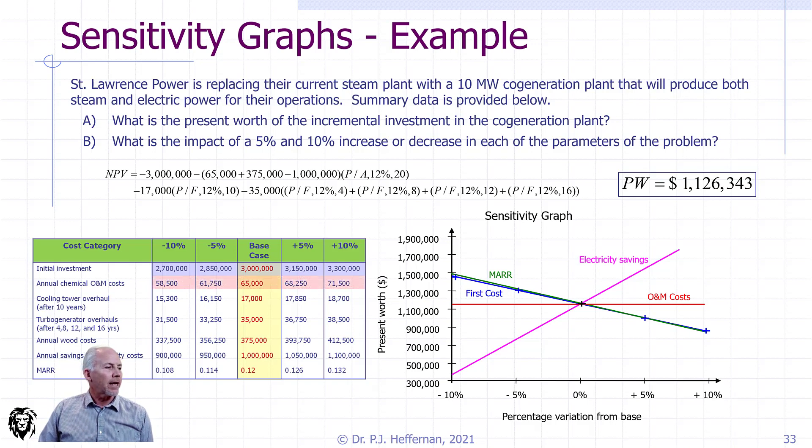If we look at the annual O&M costs, that would be the red one. And we see that it's not really sensitive at all to changes in O&M costs, very slightly, only modest changes to the net present value for changes in O&M costs, up to 10%.